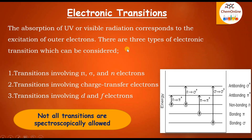Generally, there are three types of electronic transitions which can be considered. The first one is the transitions involving pi, sigma, and n electrons, where n is non-bonding. In this image, you can see different types of transitions like n-pi*, pi-pi*, n-sigma*, etc. These are generally found in organic compounds.